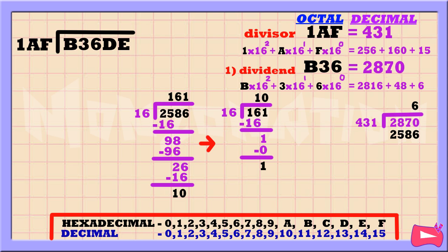Remember that you can stop dividing if the quotient is less than or equal to 15, which is F in hexadecimal. The first remainder that we get is our first hex number, the second remainder is our second hex number, and our last hex number must be the last quotient.